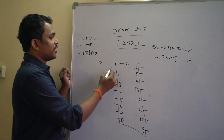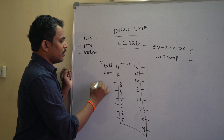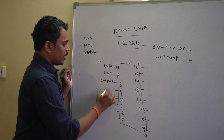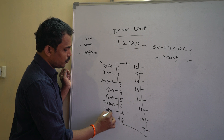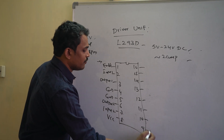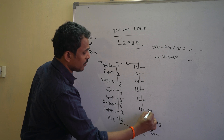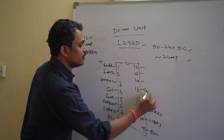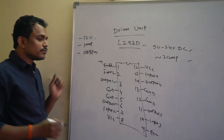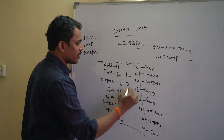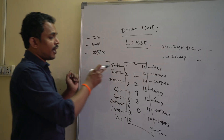The L293D is a simple 16-pin IC. Its pins are: pin 1 — Enable, pin 2 — Input 1, pin 3 — Output 1, pins 4 and 5 — Ground, pin 6 — Output 2, pin 7 — Input 2, pin 8 — VCC. The same series repeats on the other side: Enable, Input 3, Output 3, Ground, Ground, Output 4, Input 4, VCC. You can refer to the datasheet for complete details.